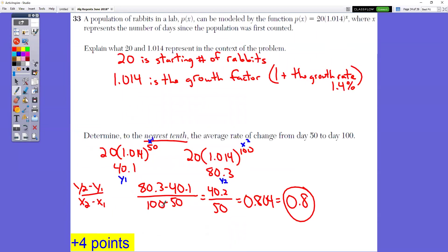In question number 33, a population of rabbits in a lab can be modeled by the function 20 times 1.014 to the x power, where x represents the number of days since the population was first counted. Explain what 20 and 1.014 mean in the context of the problem. 20 is the starting number of rabbits. The number that goes outside the parentheses is your initial value or your starting value. That's what you're starting with. So you're starting with 20 rabbits. 1.014 is the growth factor. One plus the growth rate, which is 1.4%. Remember that this 0.014, that was really 1.4% as your rate. They changed it to a decimal by moving the decimal point over two places. That's where they're getting the 0.014 from.